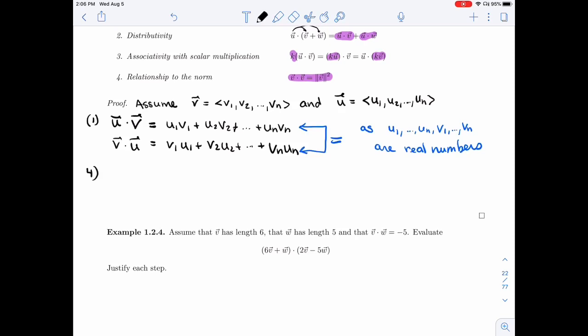So let's do four. Four is different because it doesn't actually use properties of real numbers. It's just spelling out what v dot v would be. Now, if it's v dot v, I'm taking v1 v1, v2 v2, v_n v_n.